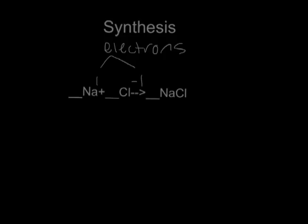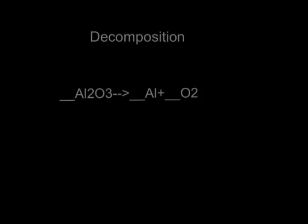Then moving on to here, I have sodium, which is one element, or that has one electron, and then I have chlorine, which has negative one. So since opposites attract, they're going to attract to each other and cling to each other, and you only need one of each, and that's just your atom.